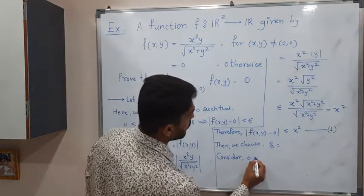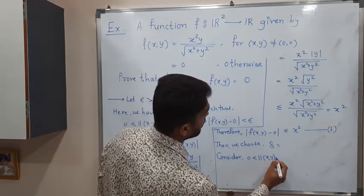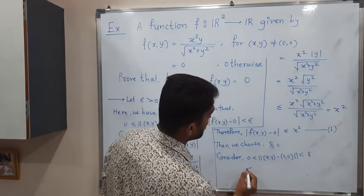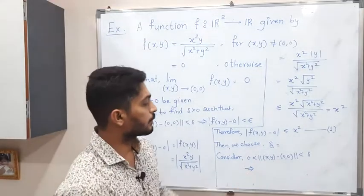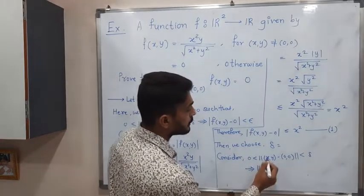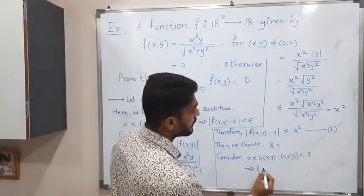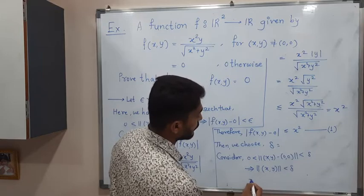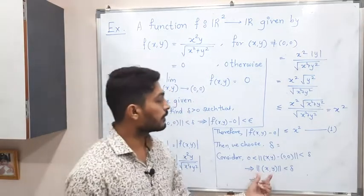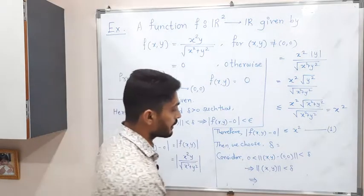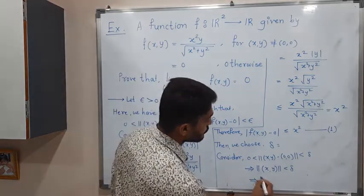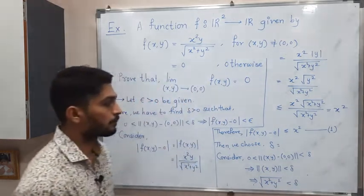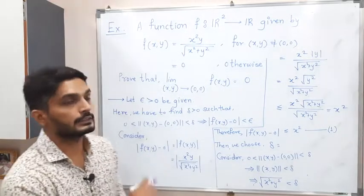Consider zero less than norm of (x,y) minus (0,0) less than delta. Component-wise subtraction gives us (x, y), so we have the square root of x² + y² less than delta. By the definition of norm this means the square root of x² + y² less than delta.